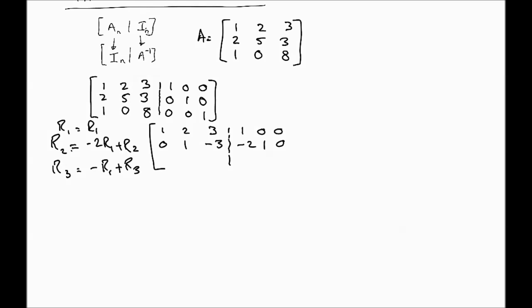Applying those operations: the first row remains the same, the second row gives us the updated values, and the third row gives us zero, then minus two, then five minus one, zero, and one. That's the first iteration — the first column is done. Our next target pivot element is the leading one in the second row.